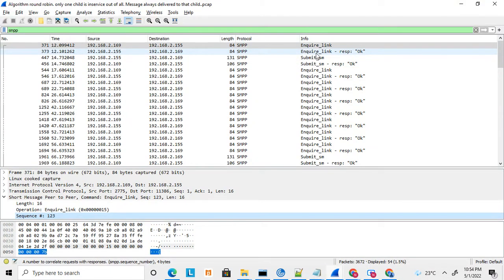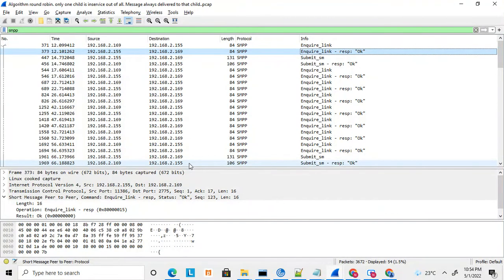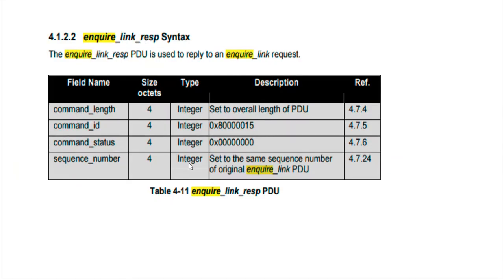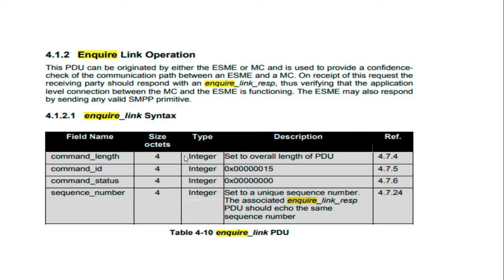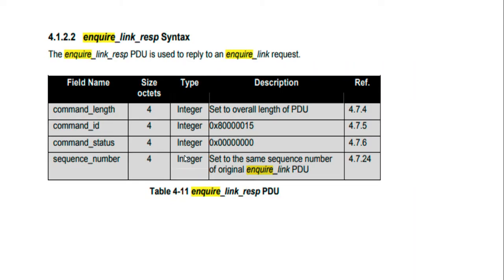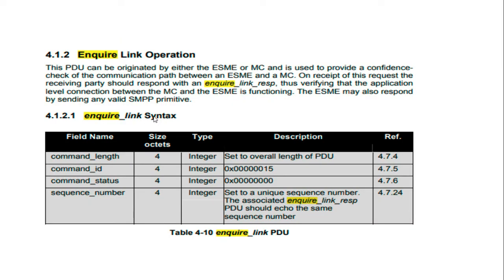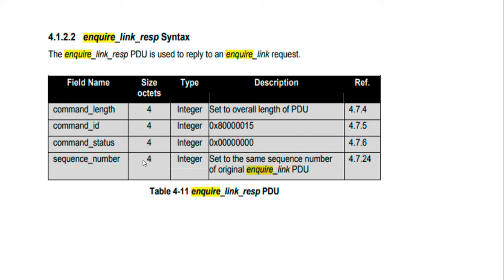If the SMSC is available, it will respond with the enquire link response. The enquire link response has the same structure — the same command status and sequence number. Whatever sequence number is sent in the enquire link request, the same sequence number is received in the enquire link response, so you can match both the request and response messages.